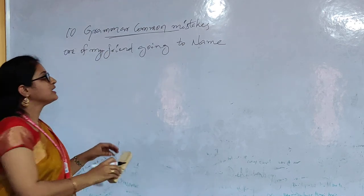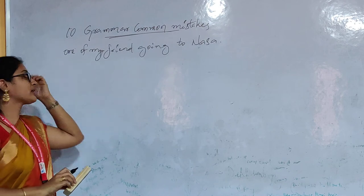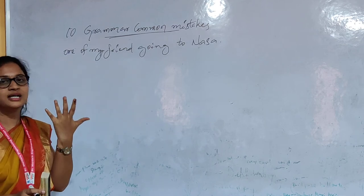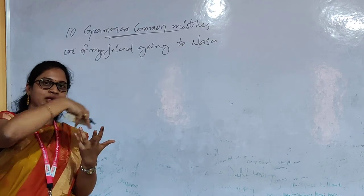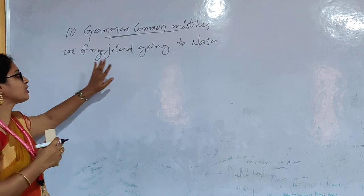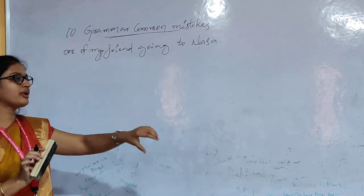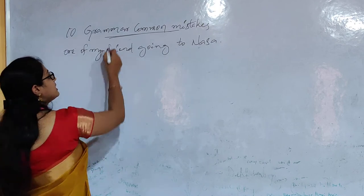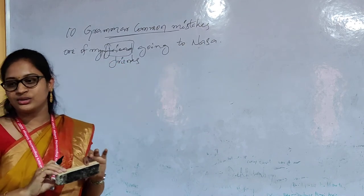Fifth mistake: 'One of my friend is going.' This is wrong because when you use 'one of', you are talking about a group of people — picking one among many. If my hand has five fingers, 'one of my fingers' refers to all the fingers together. Similarly, 'one of my friends' — you are picking one from a group. So you must use the plural: 'One of my friends is going to NASA.'